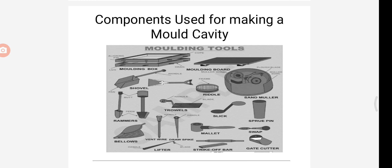Next we can see the molding board. We keep the molding box on the molding board — that is the use of the molding board. When we are ramming the pattern in the drag box, if the floor level of the drag box is not uniform there will be some mismatch. In order to avoid this, we use the molding board.